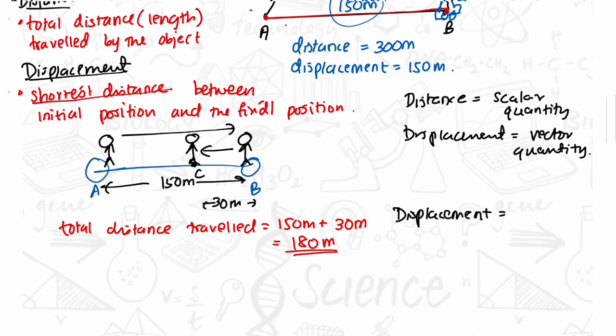But the displacement is the shortest distance between the initial position and the final position. So the displacement is the length AC. To get this length we should subtract 30 from 150. So 150 meters minus 30 meters gives us 120 meters.